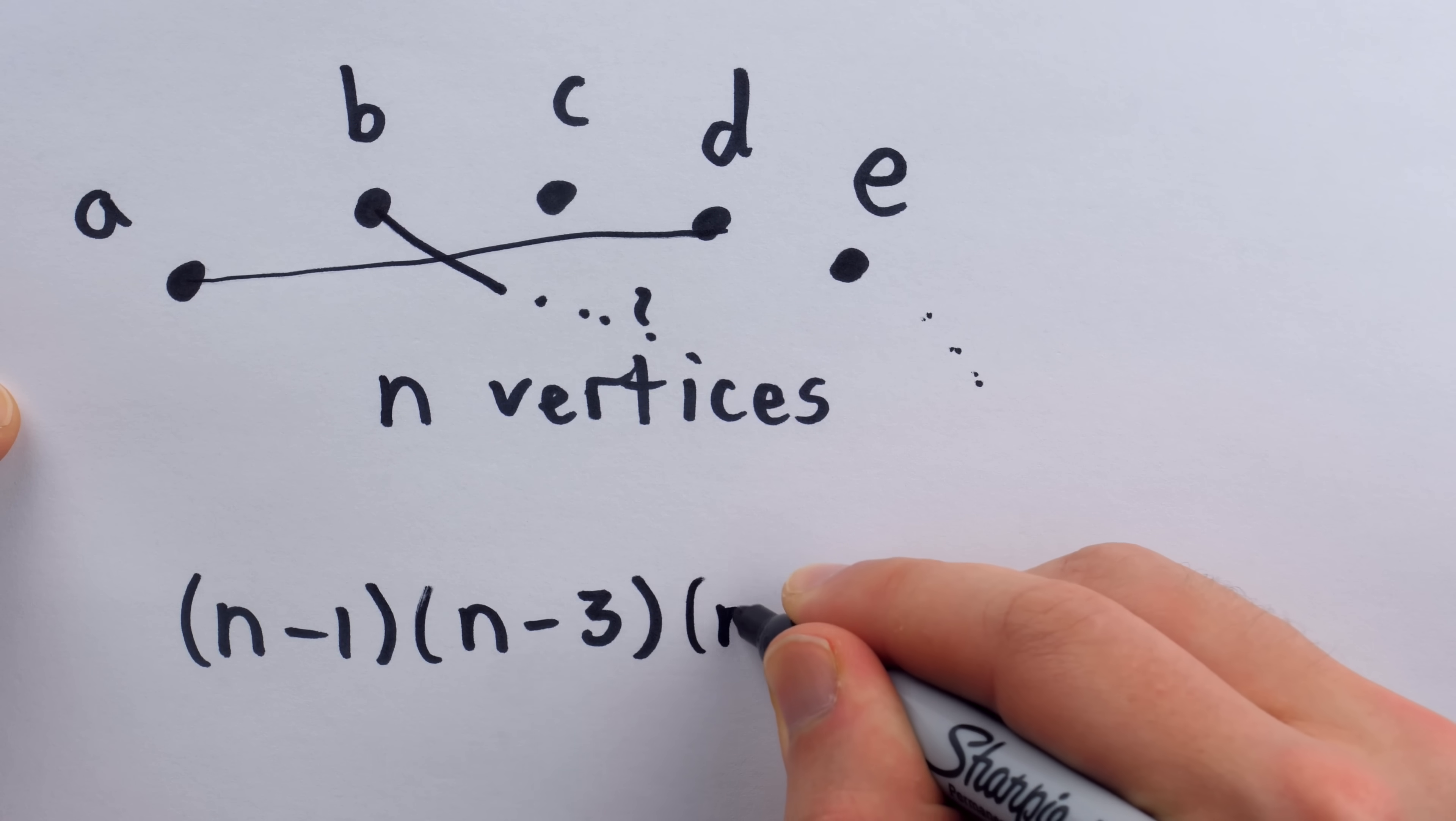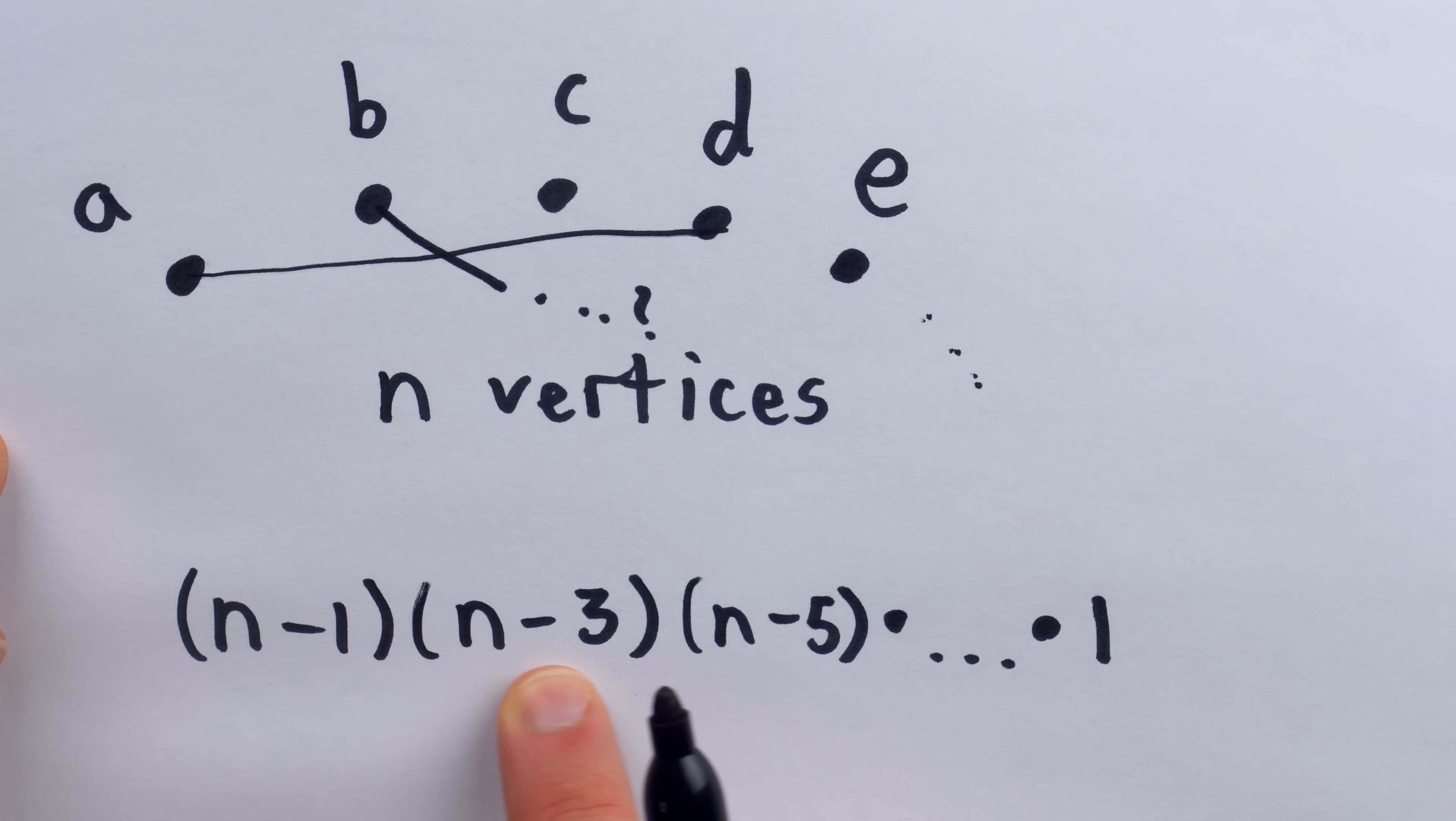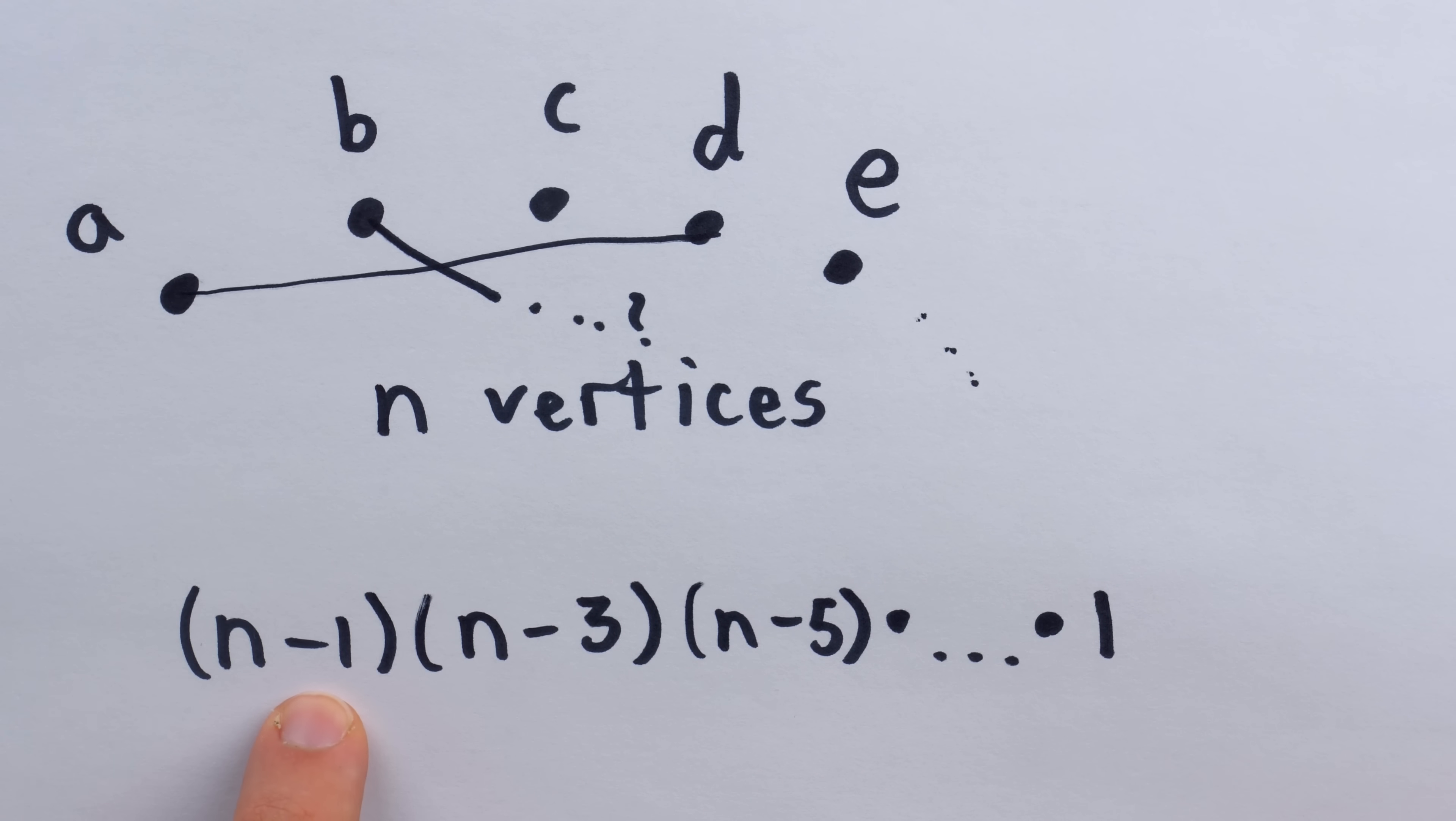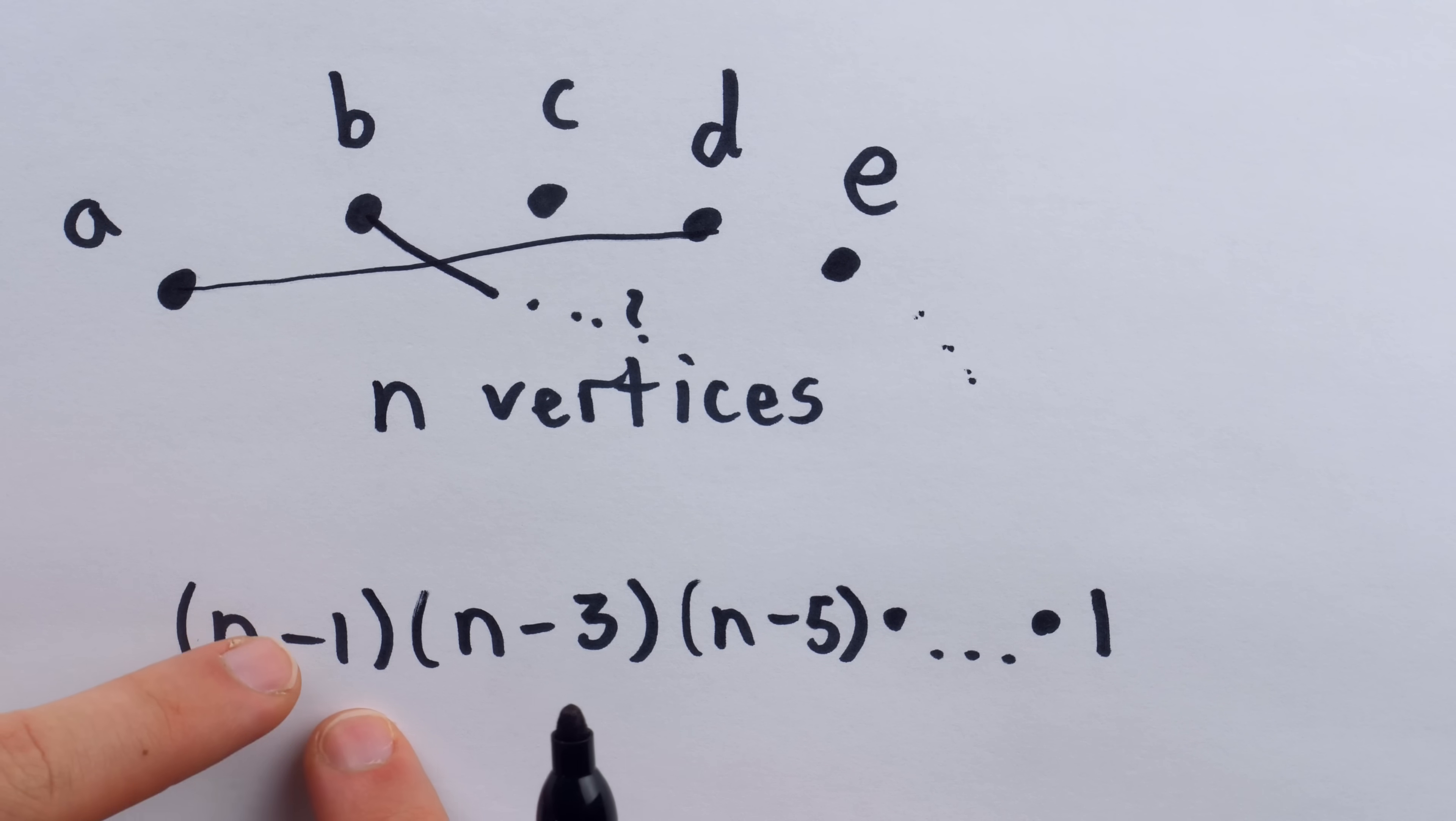You can see at each step we're knocking out two vertices from our possible choices, since we match vertices two at a time. This pattern would continue. N minus one, N minus three, times N minus five, and so on, until we only have a single choice left. But then what we're looking at here is actually N minus one double factorial. For example, imagine N was eight, then this here would be eight minus one, which is seven, times eight minus three, which is five, times eight minus five, which is three, times one, seven, times five, times three, times one. That would be a double factorial.